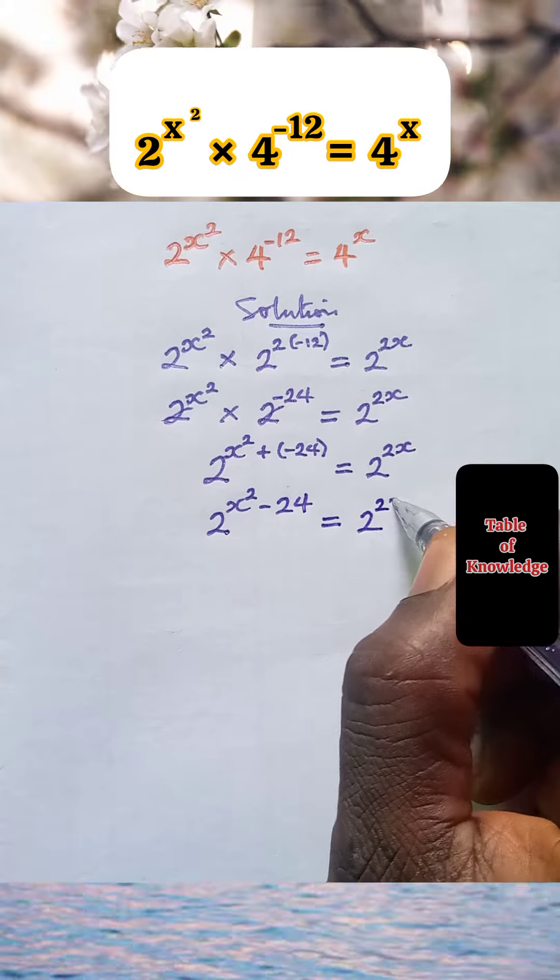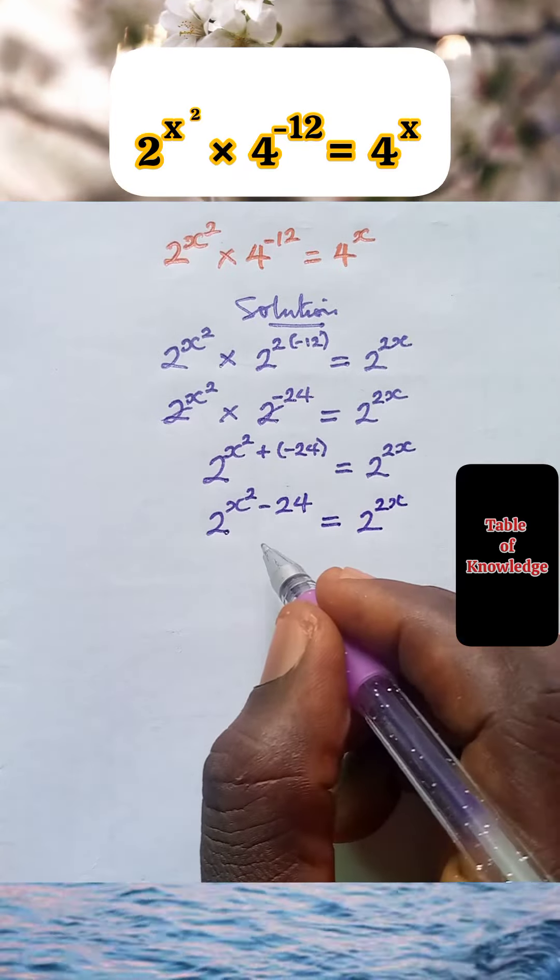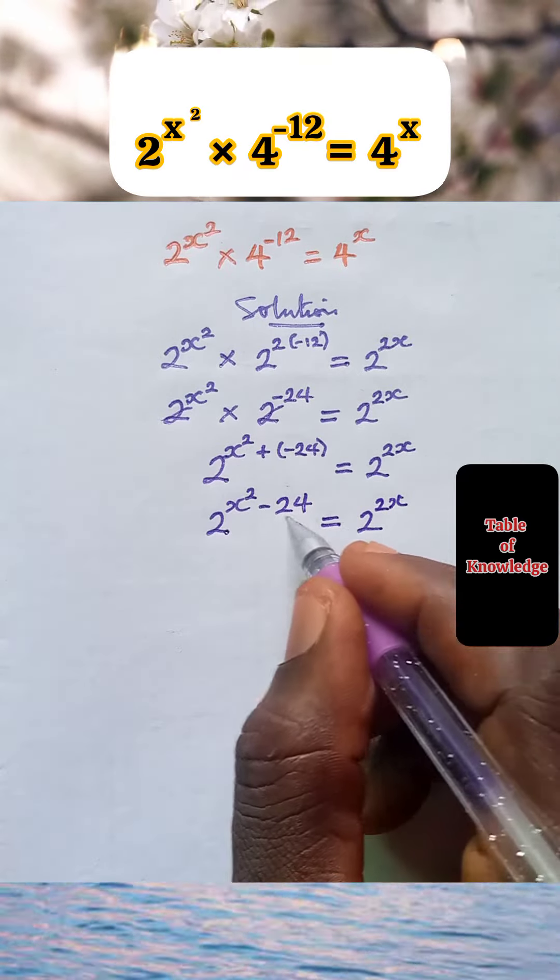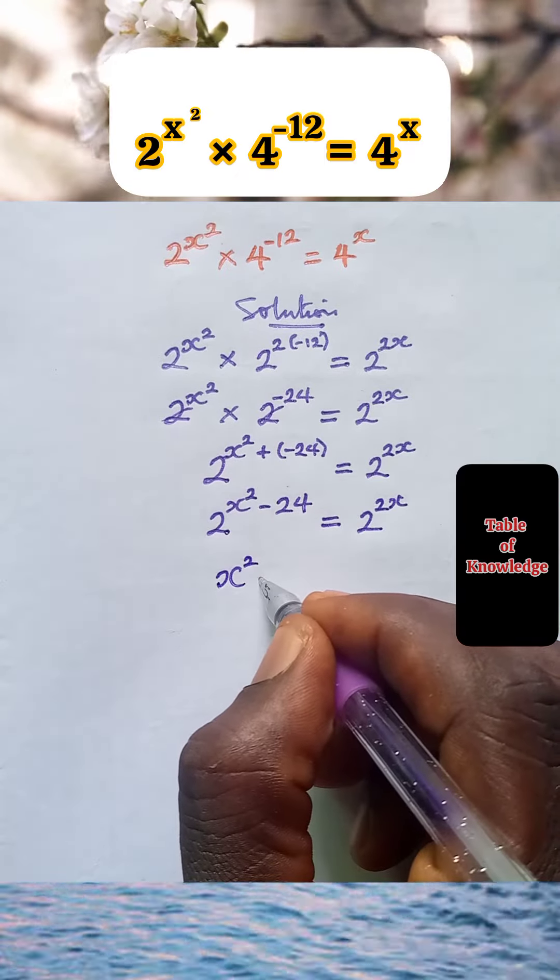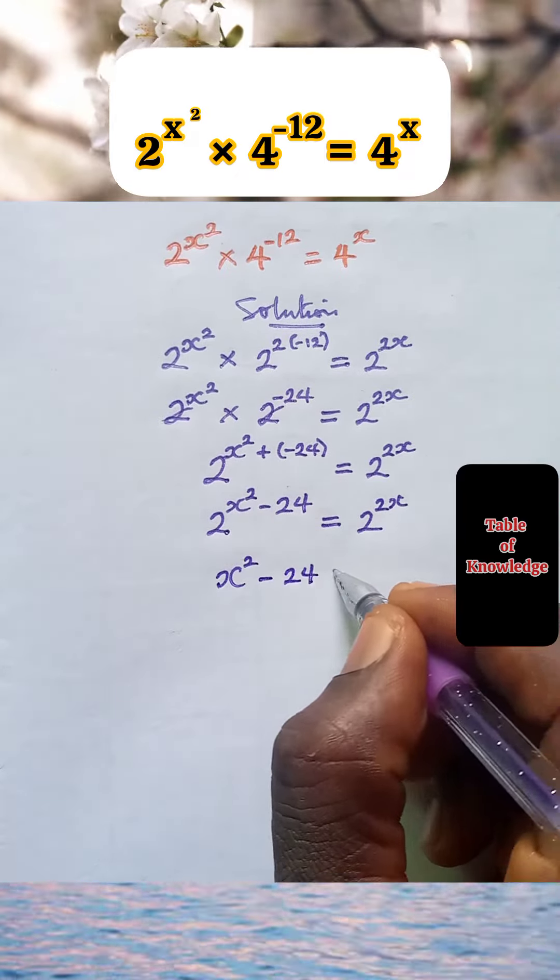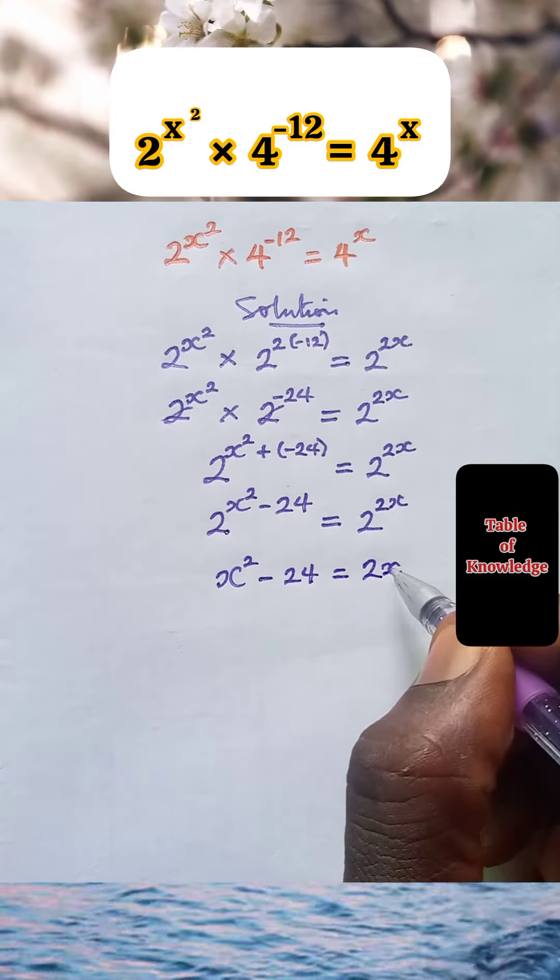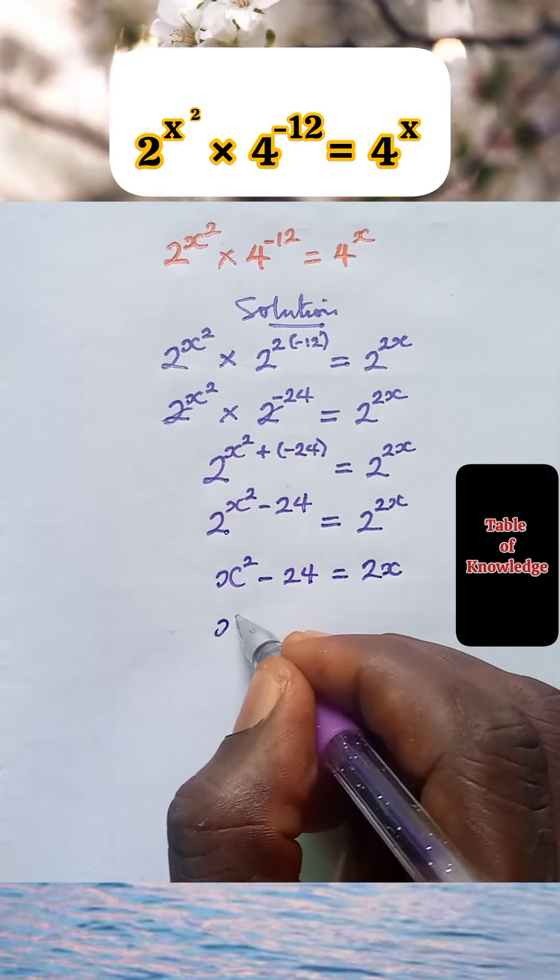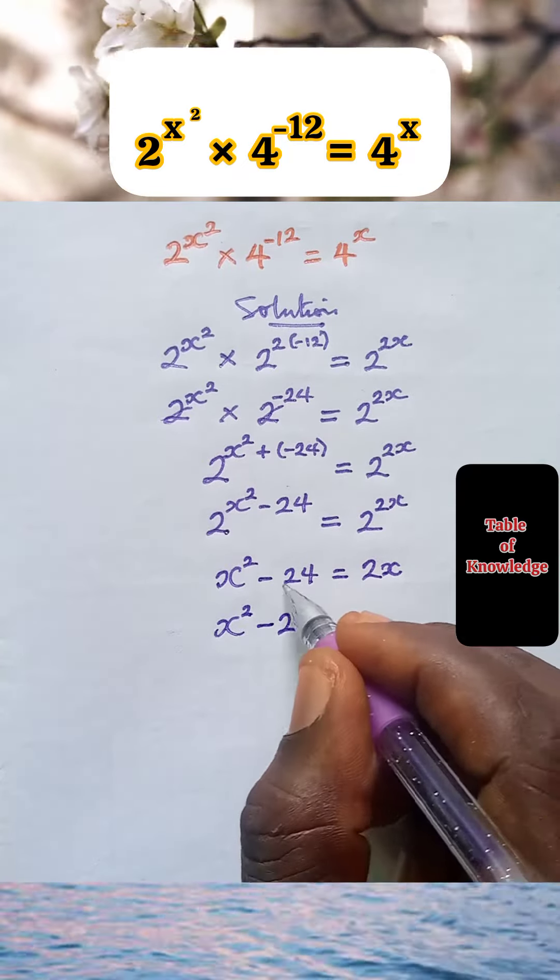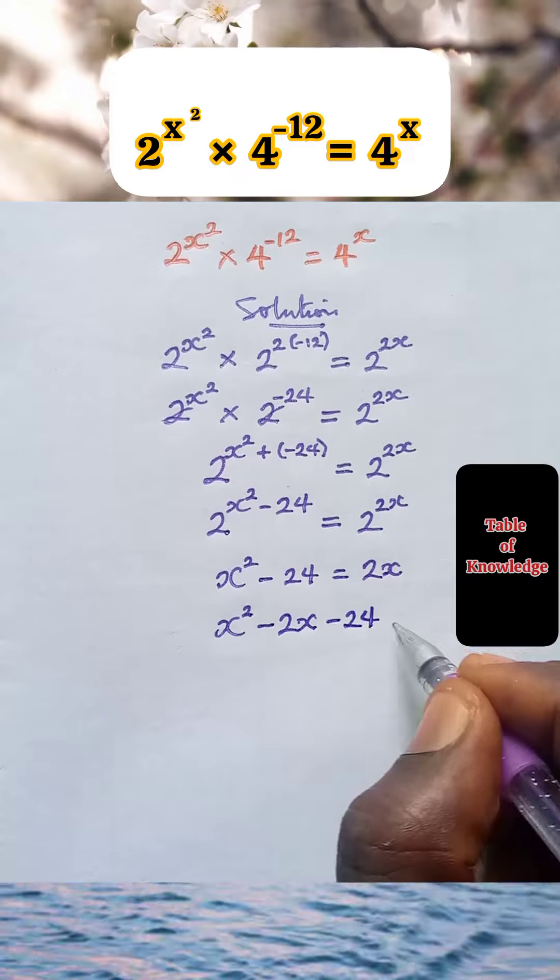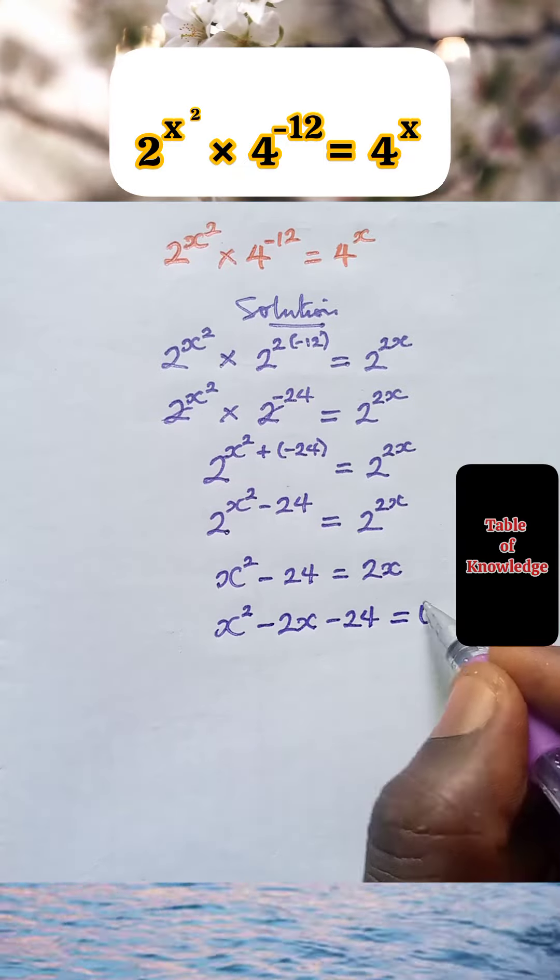Here the bases are the same, so we're going to take the powers, which is x square minus 24 equal to 2x. Let's collect like terms: x square, 2x crosses, we have minus 2x minus 24 equal to 0.